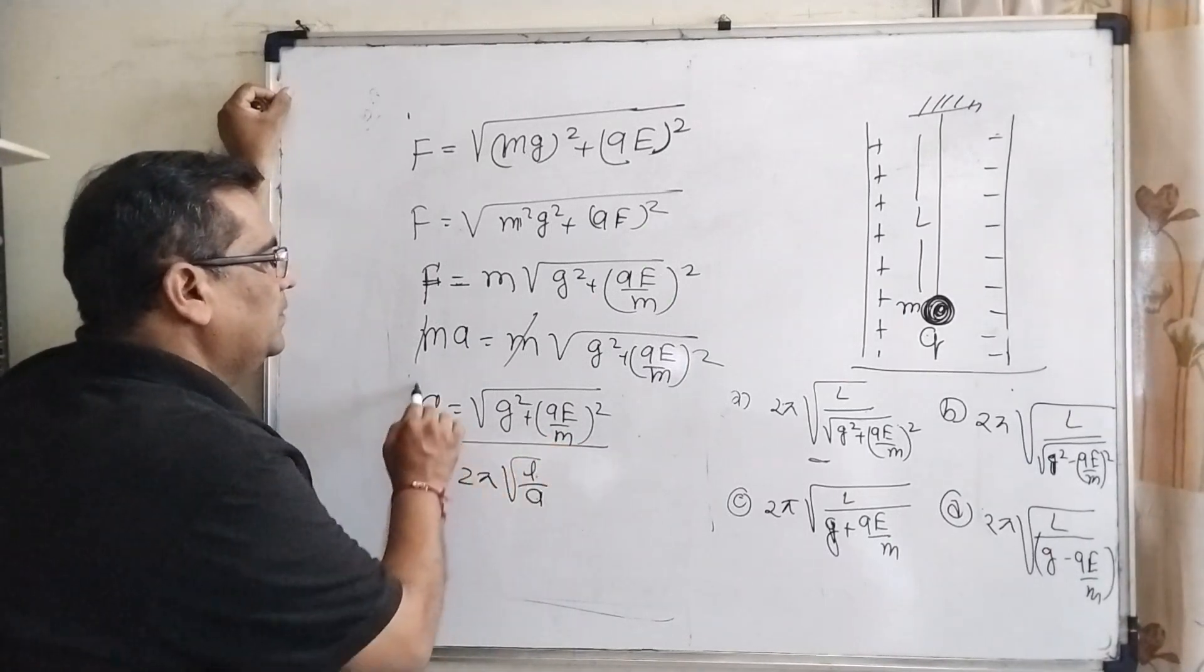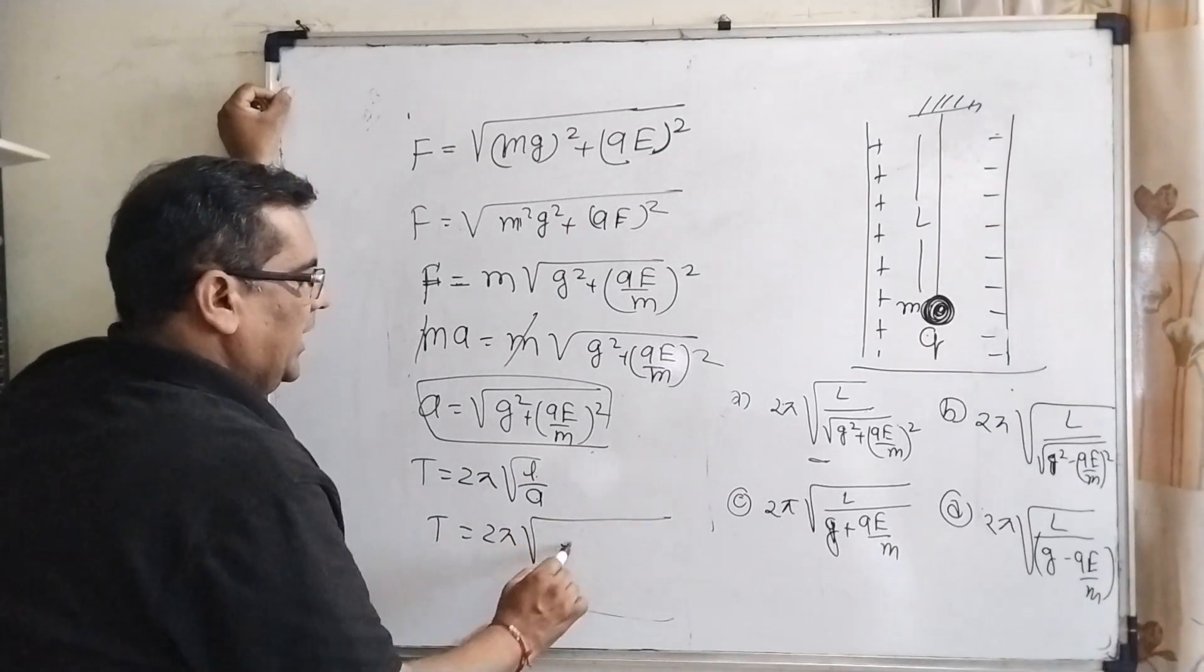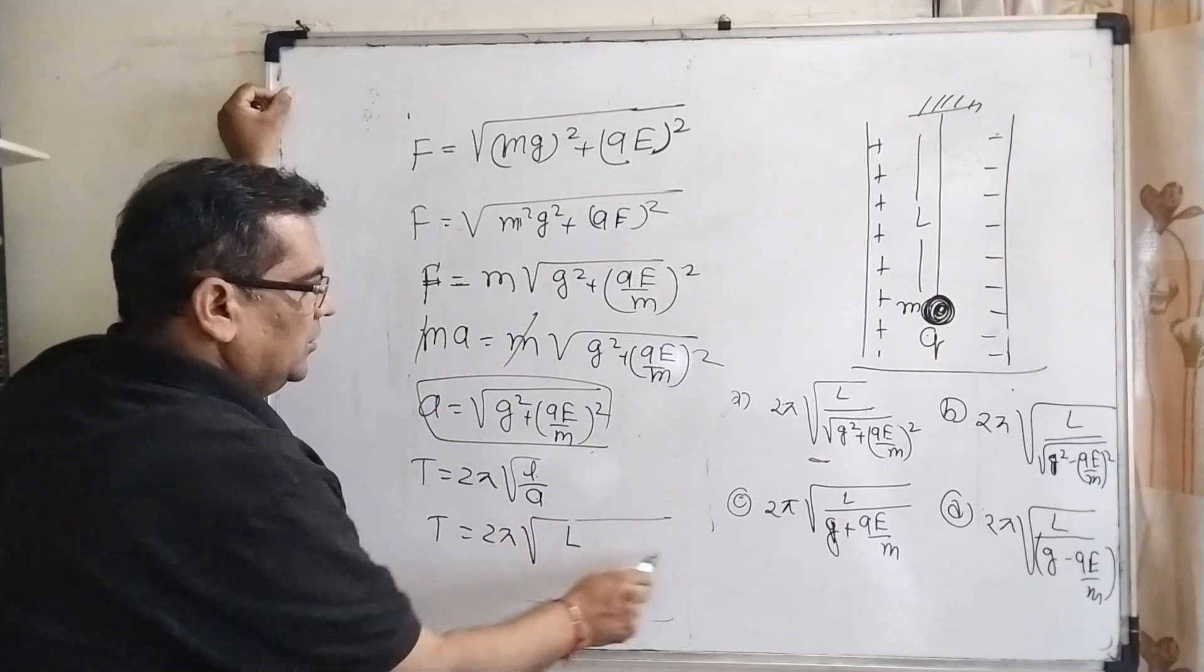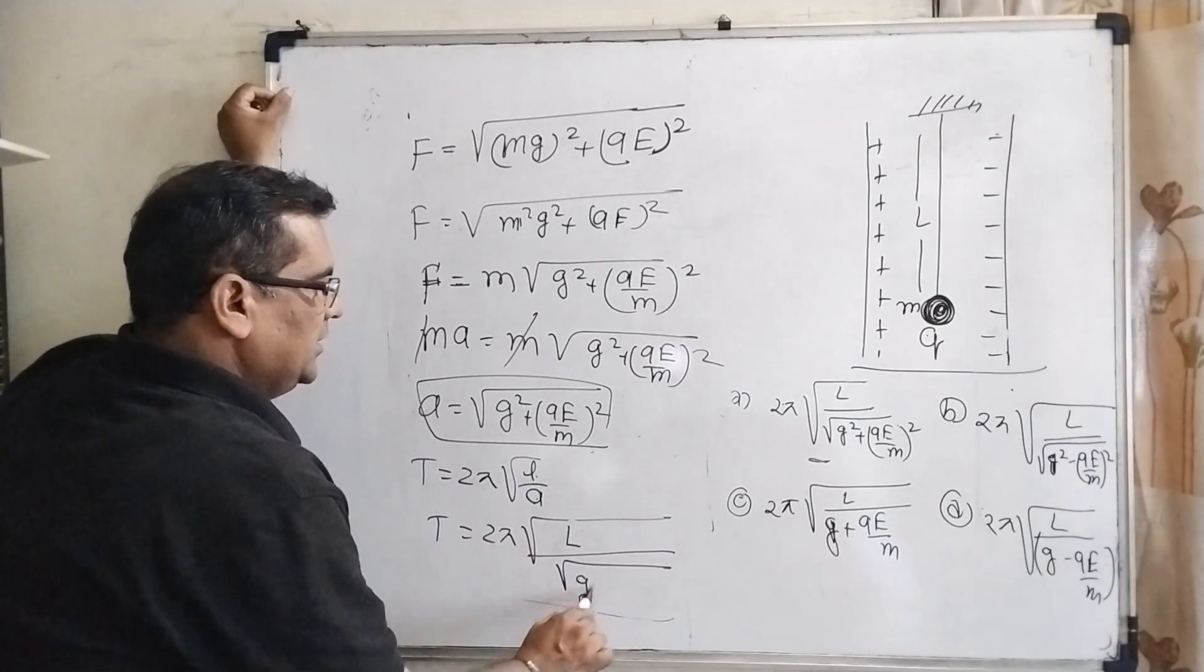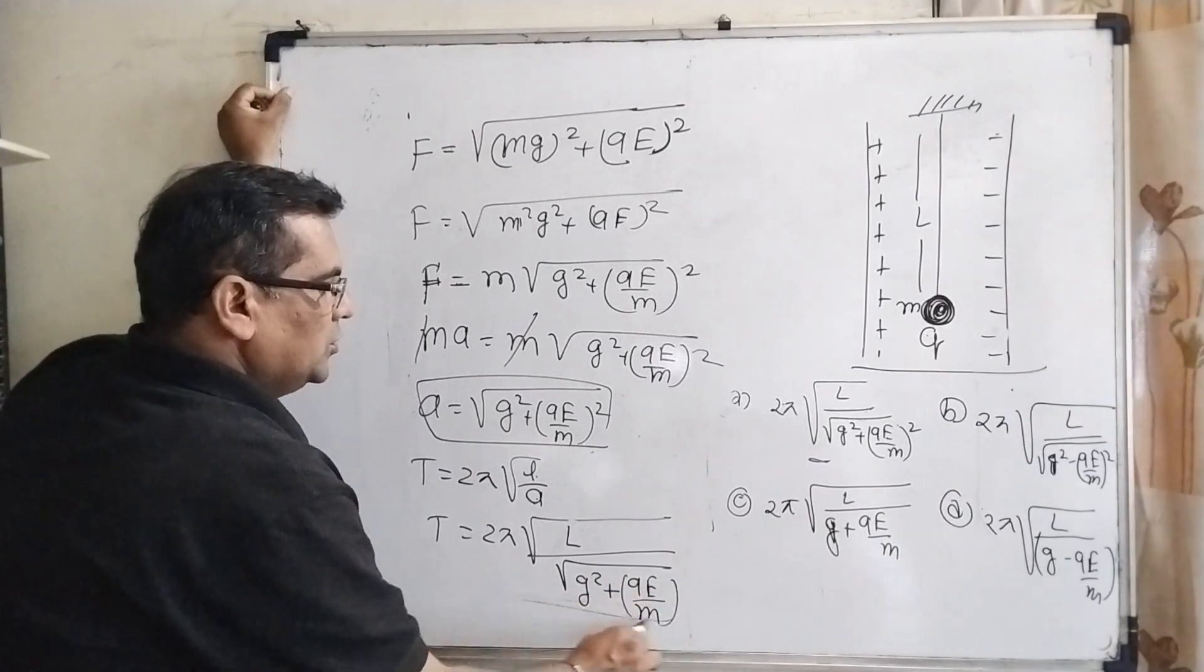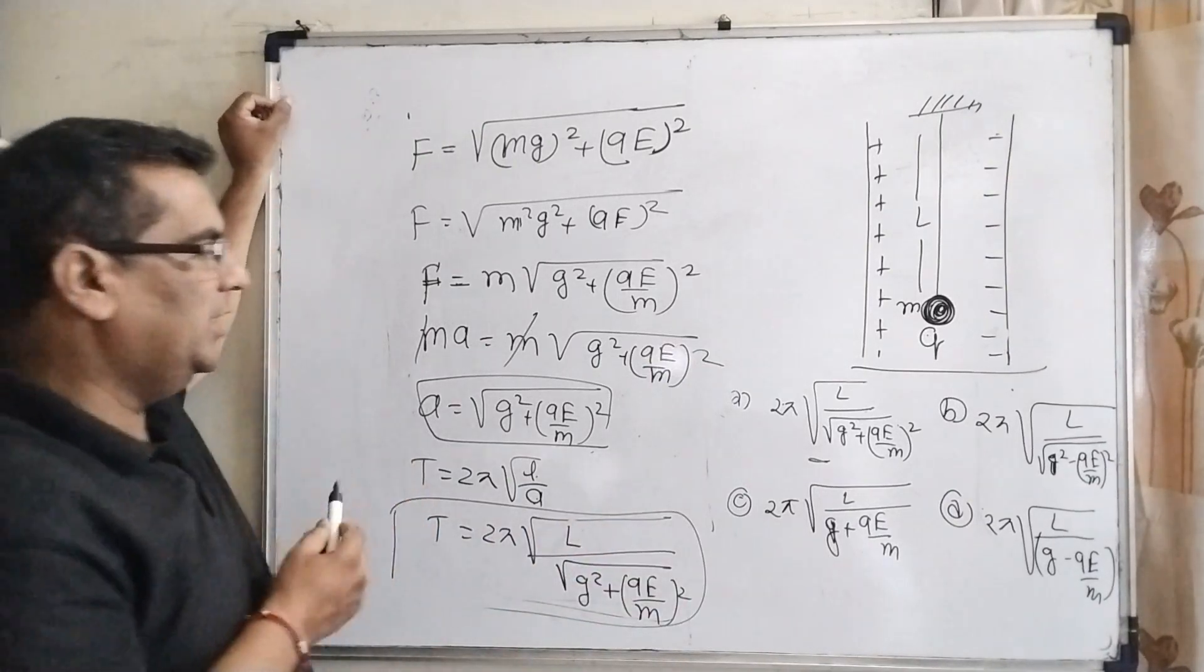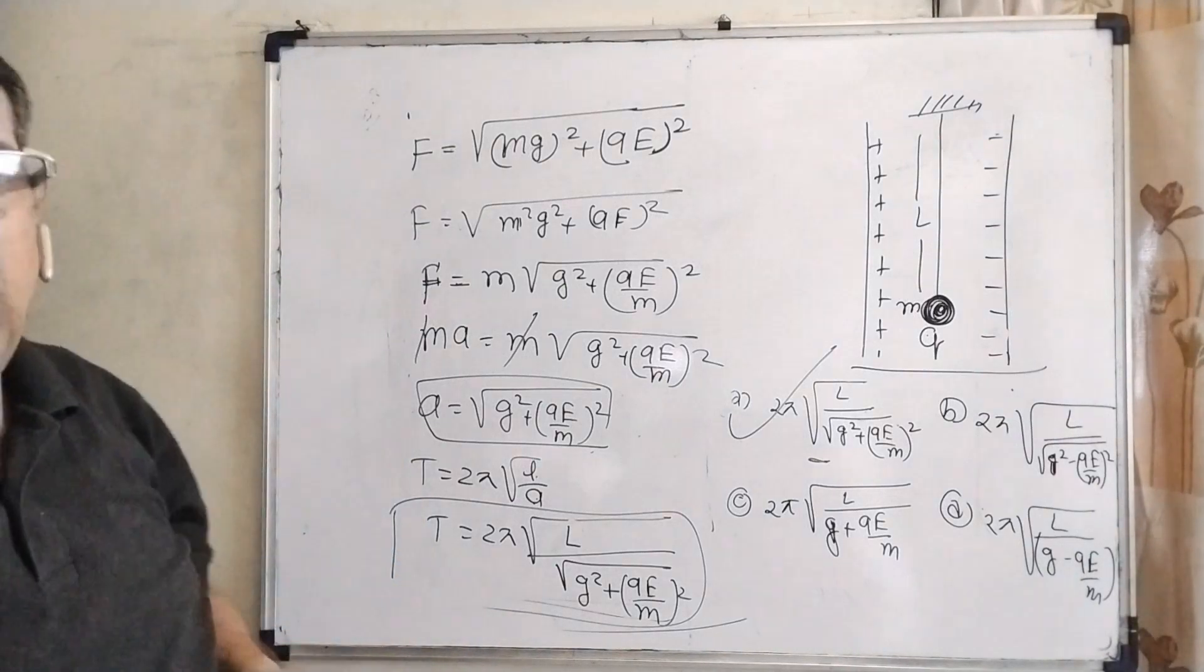T = 2π√(L/resultant acceleration). Now substitute this value in our formula. You will get L, here capital L is given, and acceleration: √(g² + (qE/m)²). Now you can see which option matches here. First option is matching here.